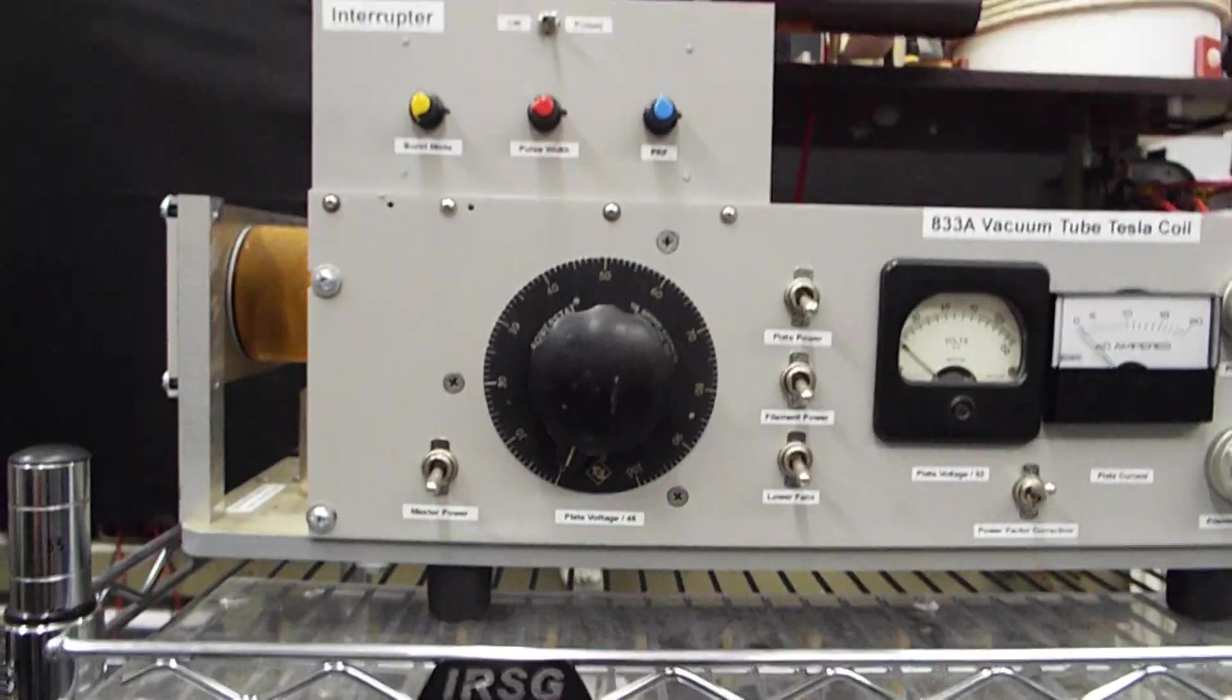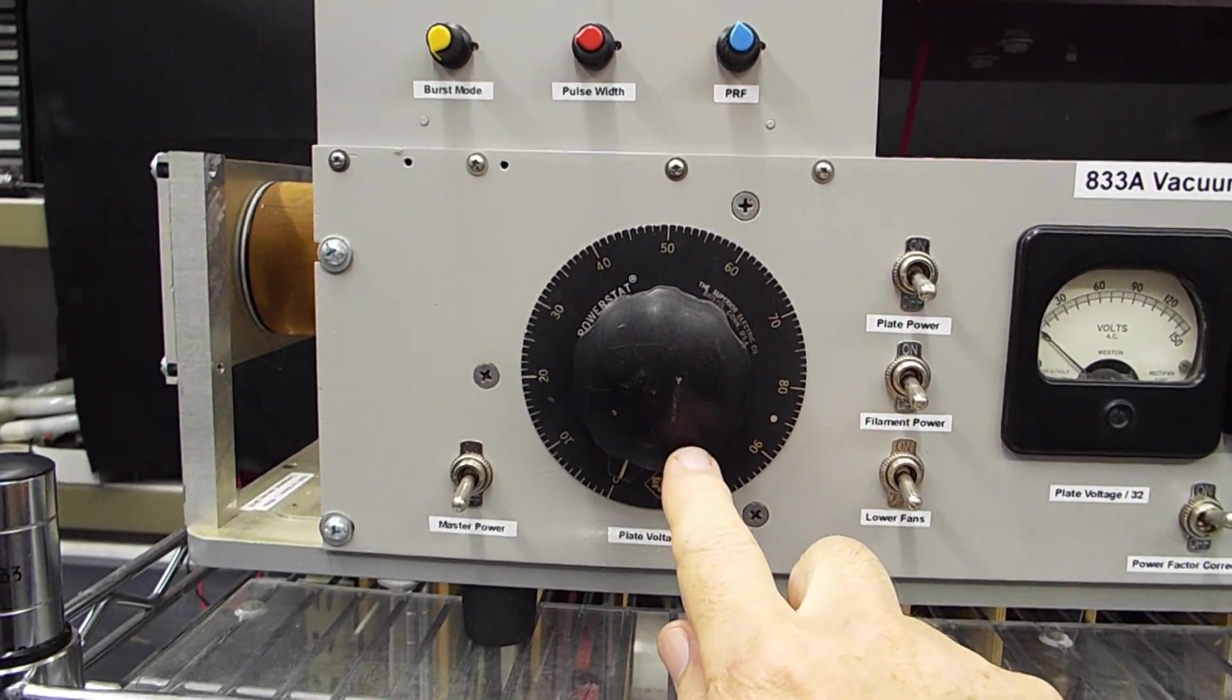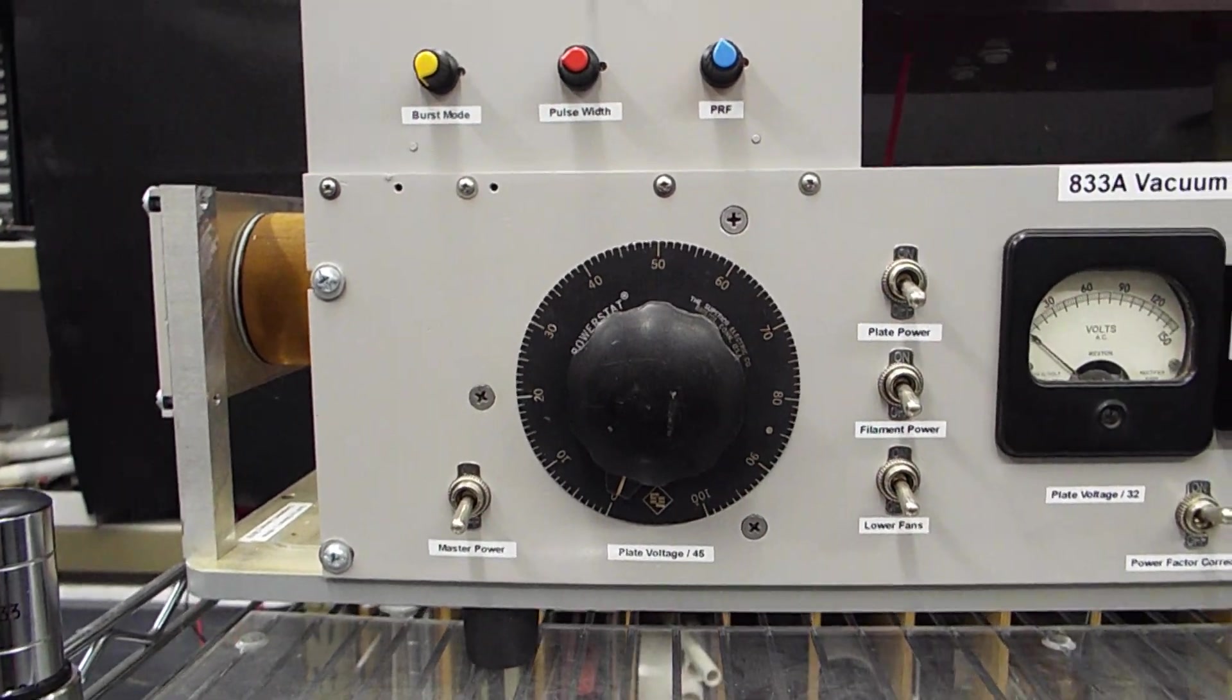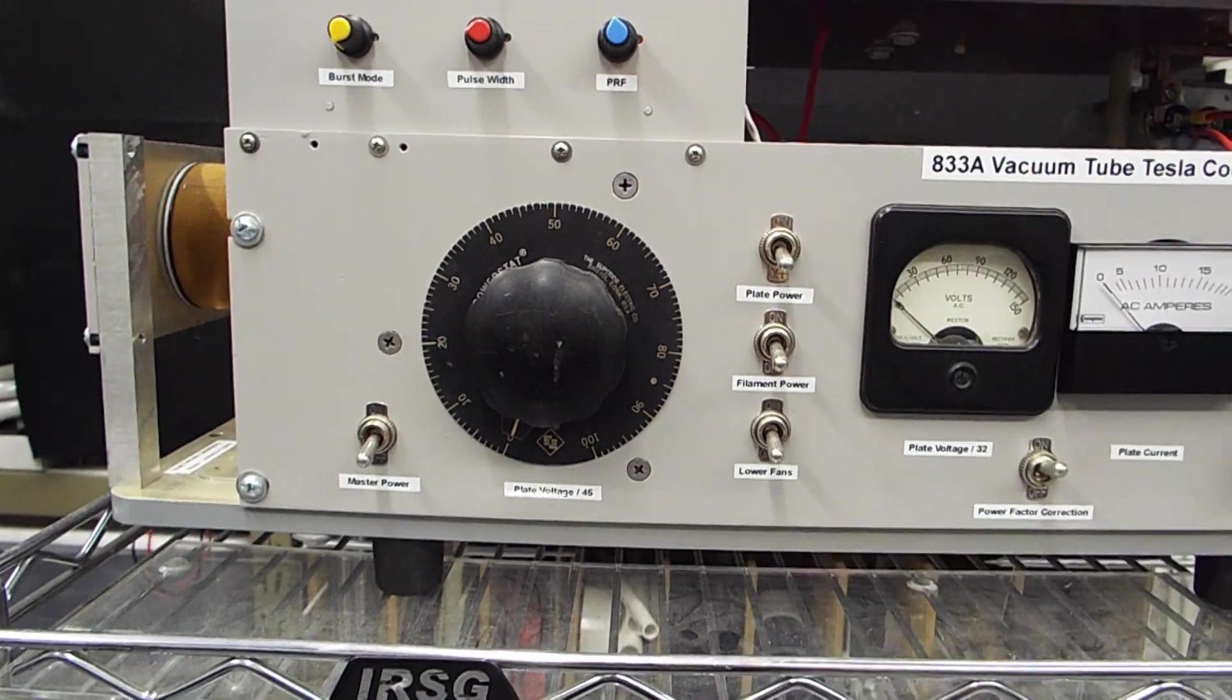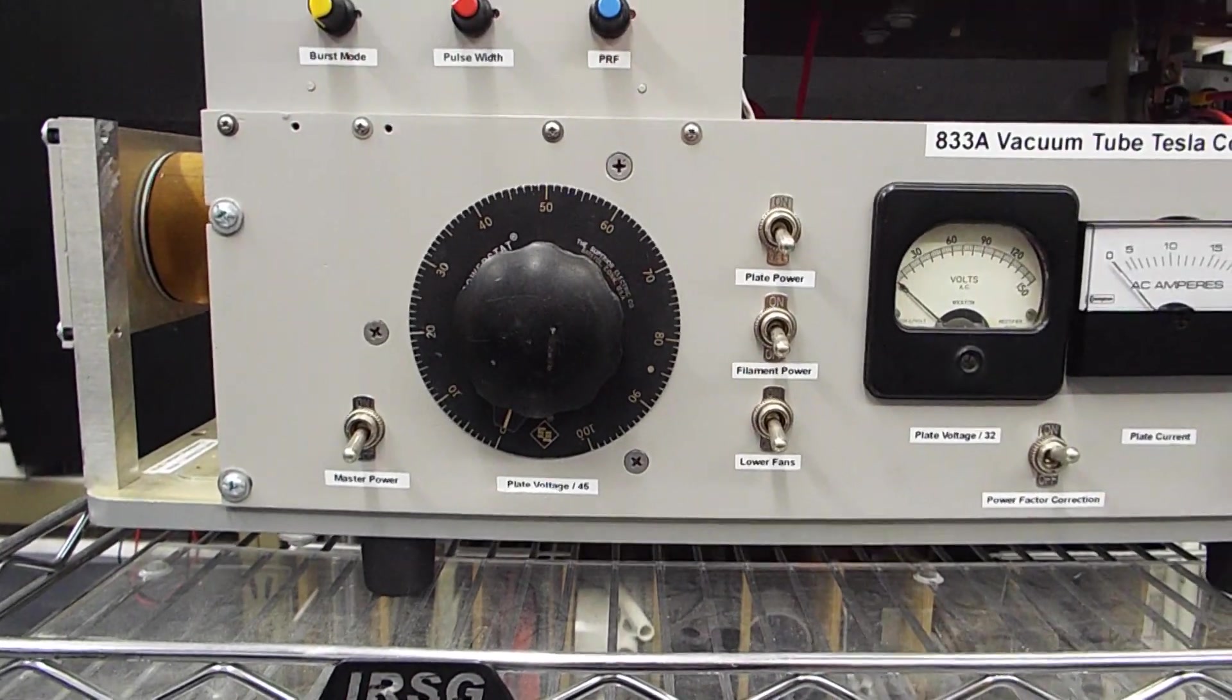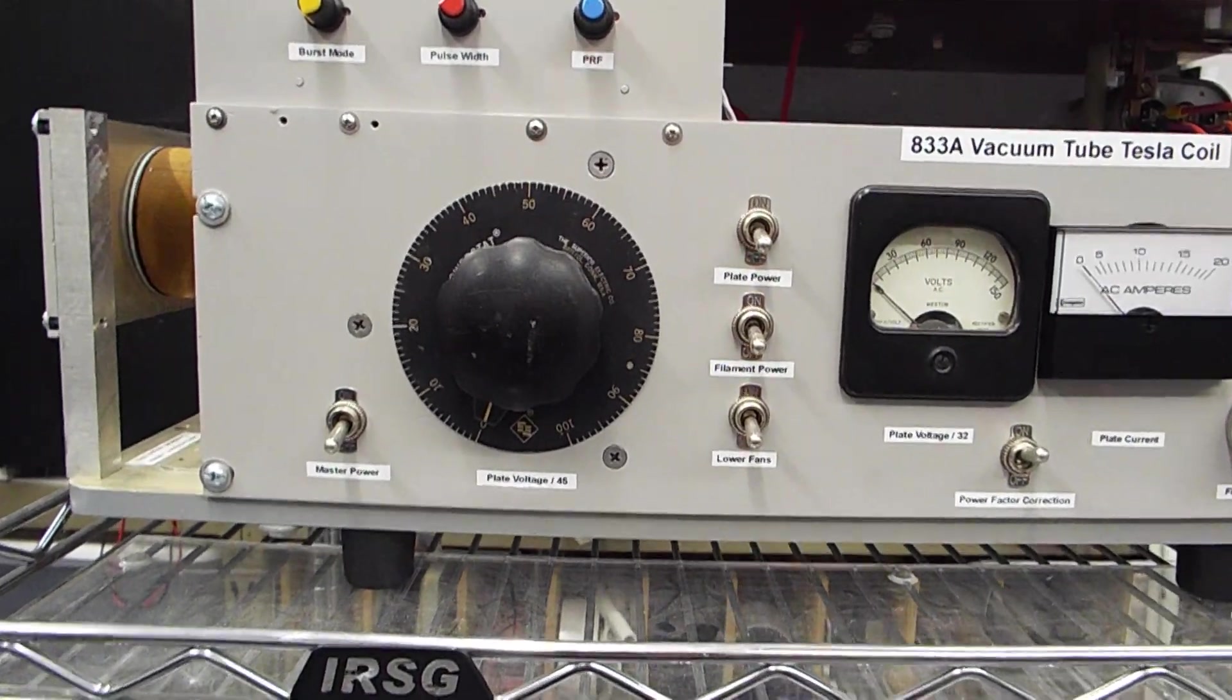And then here, this is how you adjust the plate voltage. You can go to about 0 to 240 volts, and that's into the microwave, or 0 to 120 volts, I should say, 140 volts I should say. And that's into the microwave oven transformer.